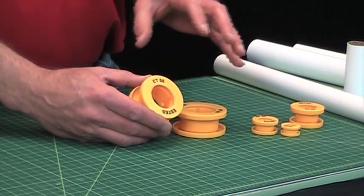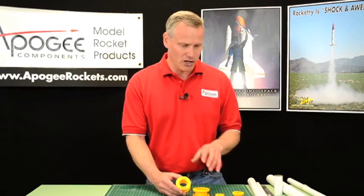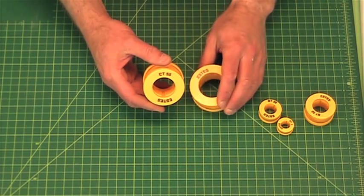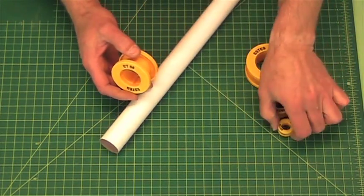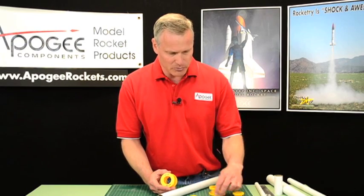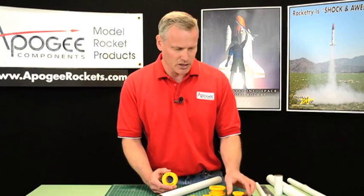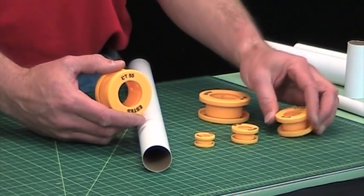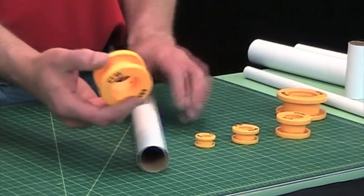Now this is Estes' version of cutting tubes and it's a different way and I'll show you how it works. There's different sizes of these rings and they're labeled for the size tube that they fit on. They go from a BT-5 to BT-20, this is the standard size, this is the mini engine size. The BT-50, this is for like a D engine size for engine mounts. BT-60 and here's a BT-55.